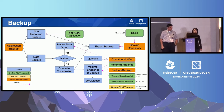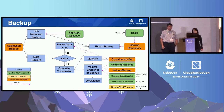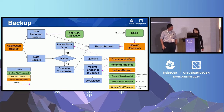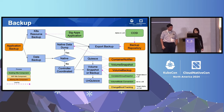A backup repository is a location or repo to store data and metadata. We have a few green blocks here representing existing features in Kubernetes. We have the application CRD owned by SIG Apps, volume snapshot owned by SIG Storage. We also have COSI, consistent group snapshot, and volume mode conversion, which I will go over later.